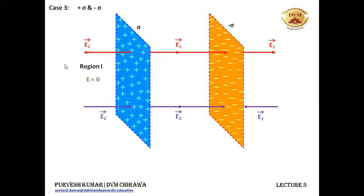In region 1 the electric field will be 0. Because E1 and E2 are acting in opposite directions and E1 is equal to E2. So they get cancelled out: sigma upon 2 epsilon naught minus sigma upon 2 epsilon naught equals 0. So the net electric field is 0 only in region 1.